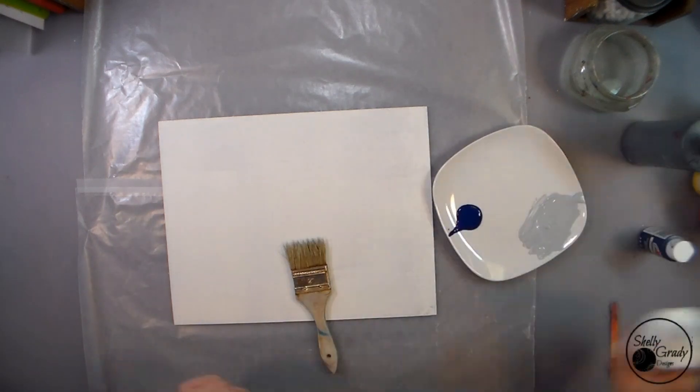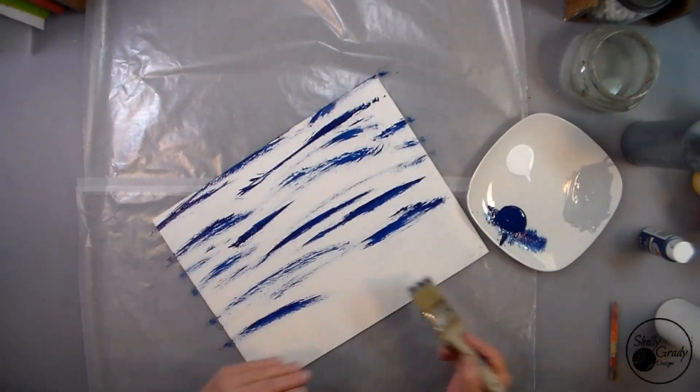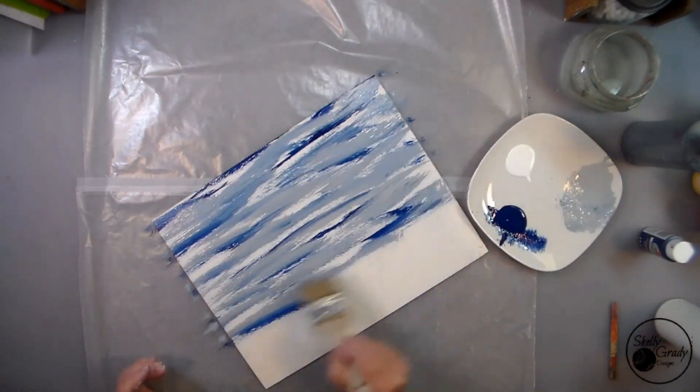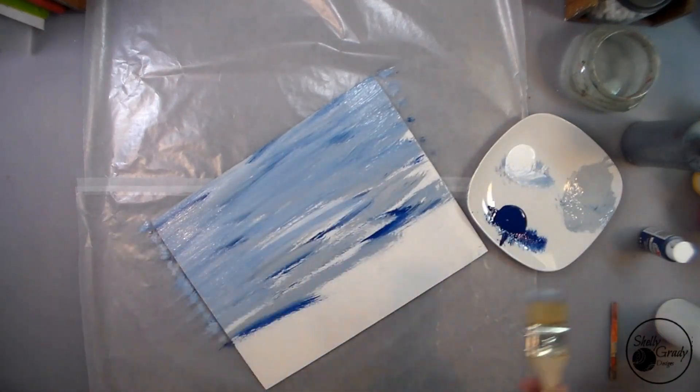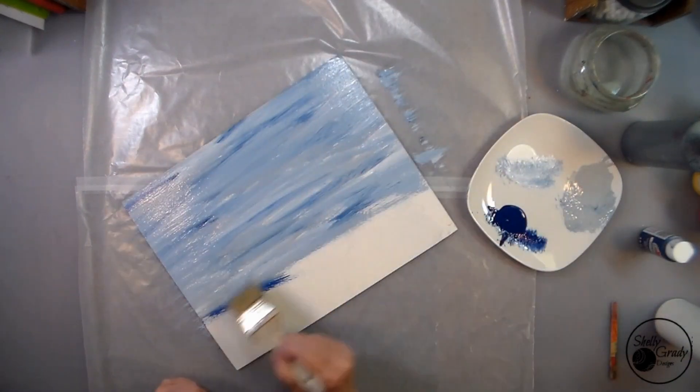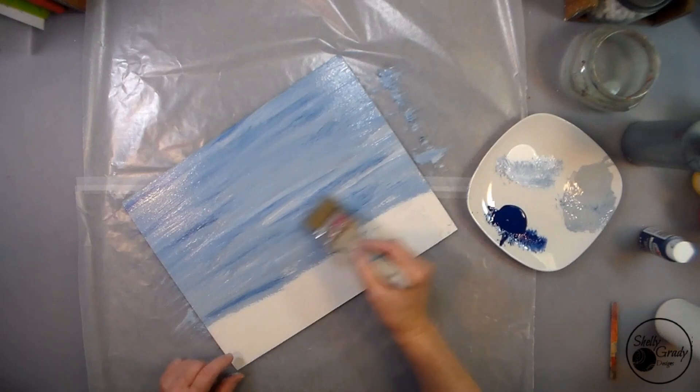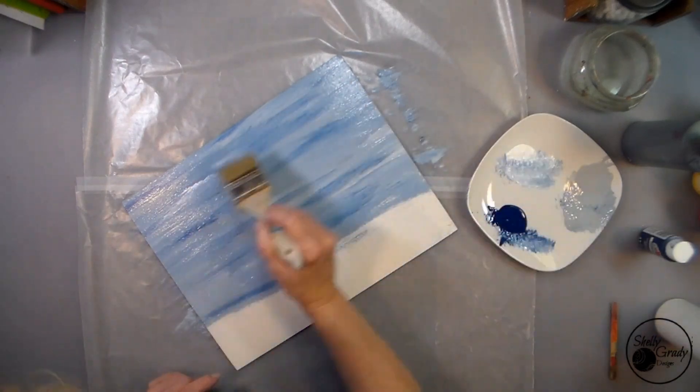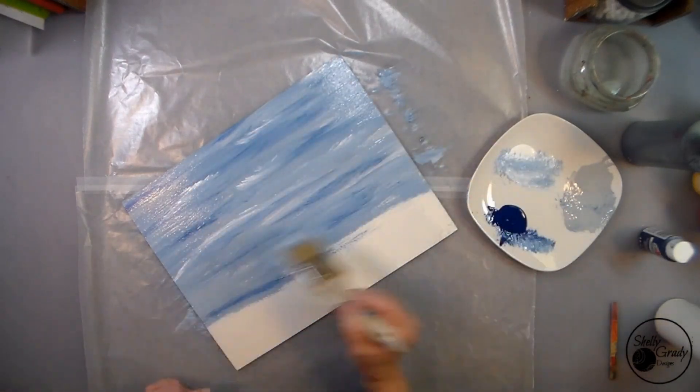I mix up some light gray using my white and a little bit of my dark gray. I also have a little navy out, and then I'm going to use the side of my brush to swipe on each of the different colors until I have a nice sky looking background.